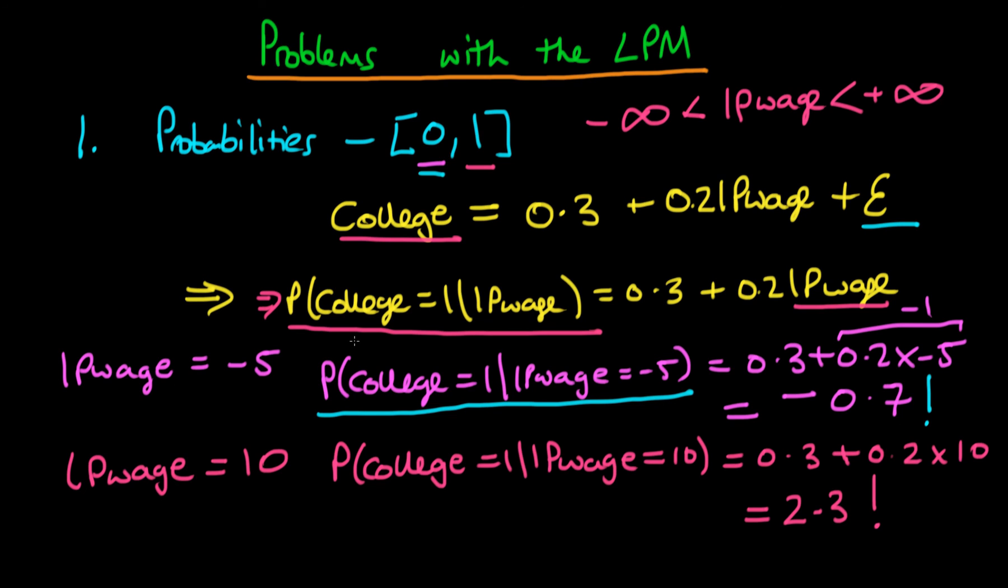And this is probably the most major issue with the linear probability model. It's because it allows for values which are outside the acceptable range for probabilities. I'm also going to talk about two of the other problems with the linear probability model in the next few videos.